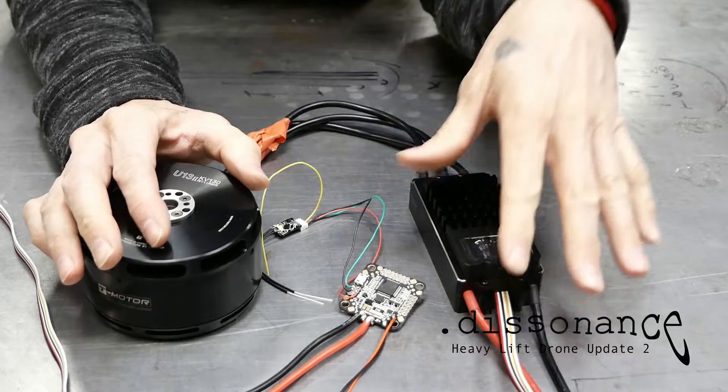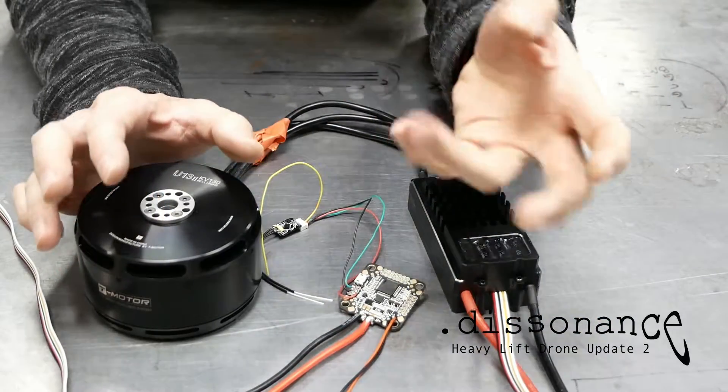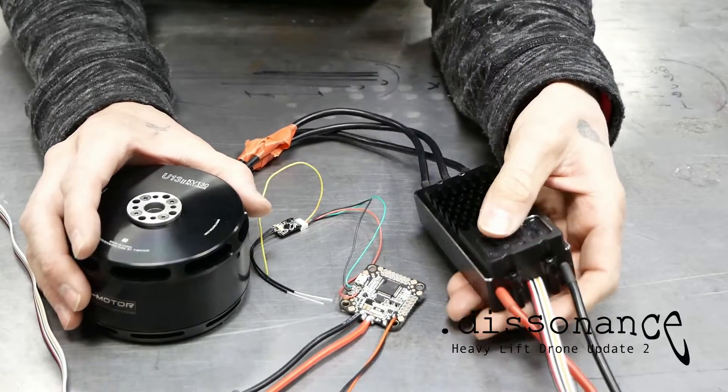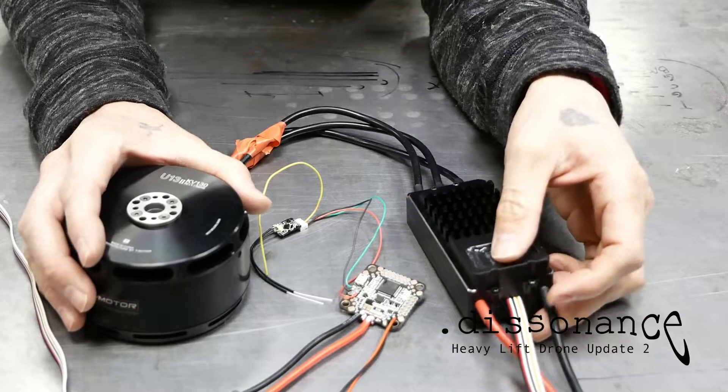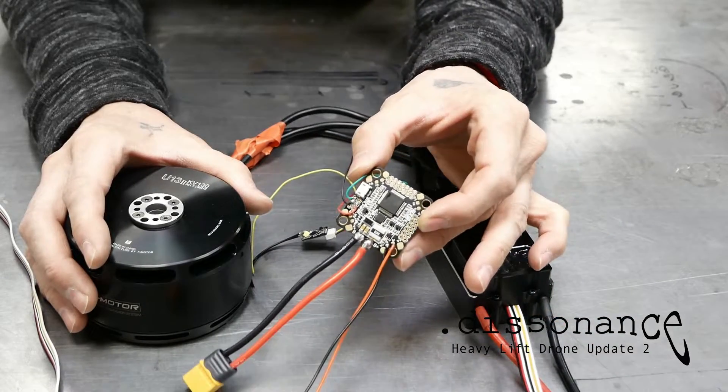We had the ESC hooked up to a plane-like aircraft flight receiver. So then the next step to try to get this thing to work the way that we wanted to is to get it hooked up to a flight control board.